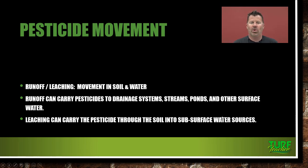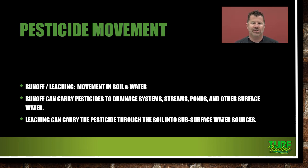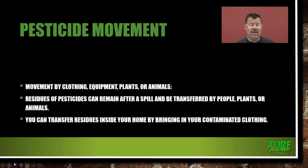You could also have runoff or leaching — movement in the soil and water. Runoff can carry pesticides to drainage systems, streams, ponds, and other surface water. Leaching can carry the pesticide through the soil into subsurface water sources, which could be our wells and drinking water. You have to pay close attention to weather patterns. Are we going to have a monsoon tonight that will wash the whole product away before it's even effective? Study how the weather will act over the next few days. Some chemicals — you may not even want to turn the irrigation system on until the application completely dries. Read the label — it's going to help you figure this out.